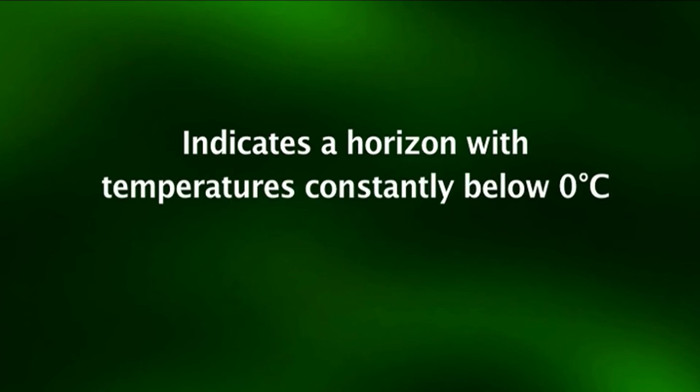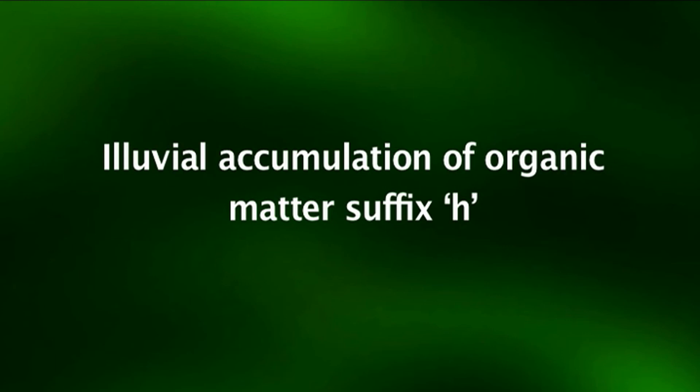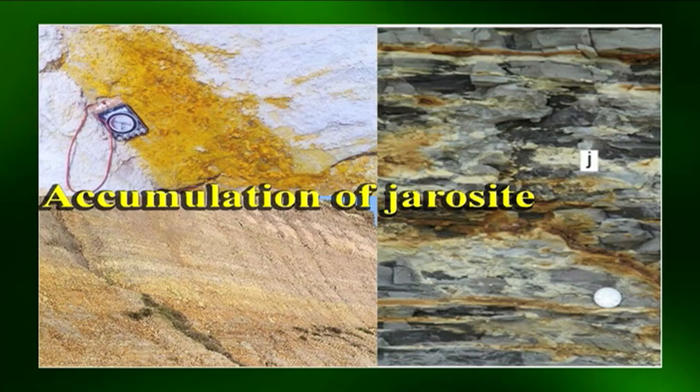Suffix 'ff' for dry permafrost — indicates a horizon with temperatures constantly below 0 degrees centigrade. Suffix 'g' for strong gleying — used to indicate reduction or removal of iron with water saturation, and redox concentrations with chroma of 2 or less. Suffix 'h' for illuvial accumulation of organic matter — used with B horizons to indicate the accumulation of illuvial organic matter and sesquioxides that coated sand and silt particles. Suffix 'j' for accumulation of jarosite — an alteration product of pyrite under oxidizing conditions, generally with chroma of more than 6.